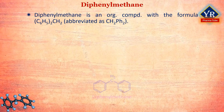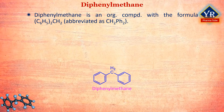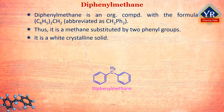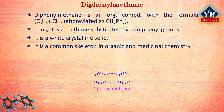Diphenylmethane is an organic compound with the chemical formula (C6H5)2CH2, which is often abbreviated as CH2Ph2, where Ph stands for phenyl. Structurally, it is a diarylmethane — that is, methane substituted by two phenyl groups. The compound consists of methane wherein two hydrogen atoms are replaced by two phenyl groups. It is a white crystalline solid with a melting point of 26 degrees centigrade and is a common skeleton in organic and medicinal chemistry.